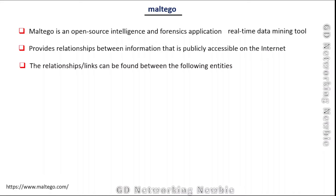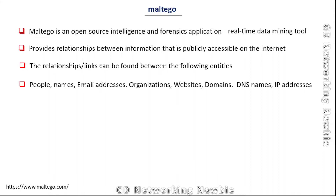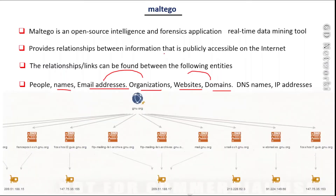This relationship is found between various entities. The entities can be names, email addresses, organizations, websites, domains, and DNS names. The relationships between these entities will be shown graphically to us using the Maltego tool.